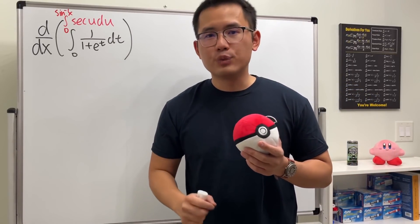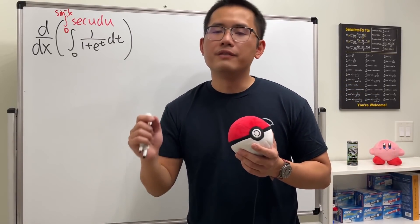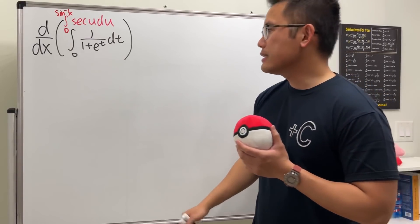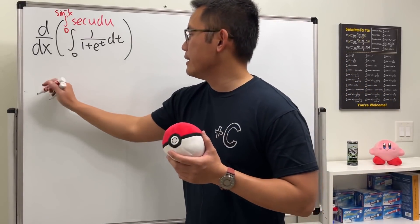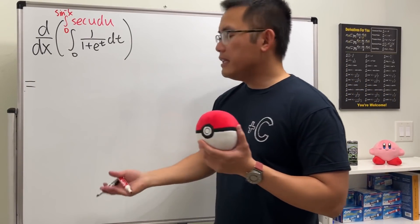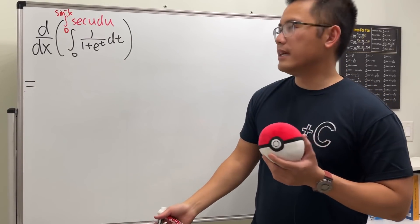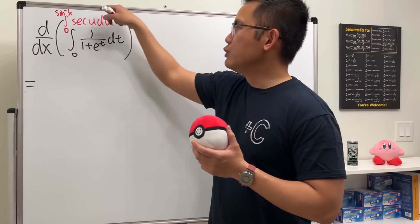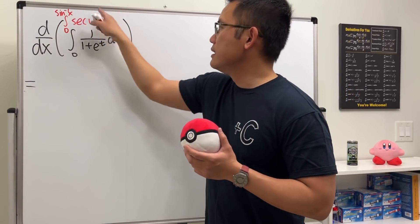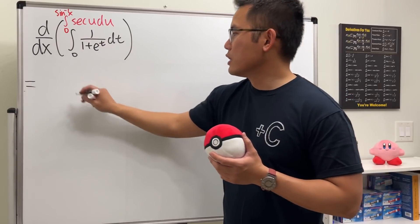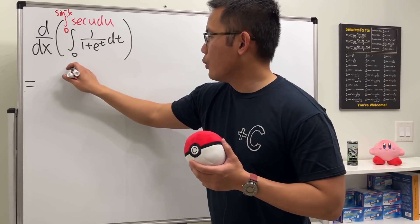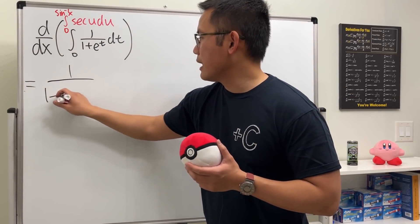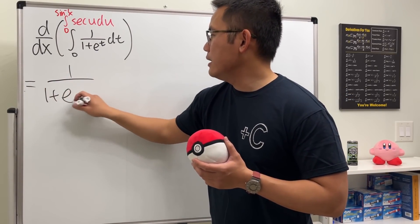We can just use the Fundamental Theorem of Calculus Part 1. So let's go ahead and make that happen. FTC1 pretty much says the derivative and integral cancel, and we just have to replace the upper limit into the dummy variable. So we will first get 1 over, and then we have 1 plus e, and then...